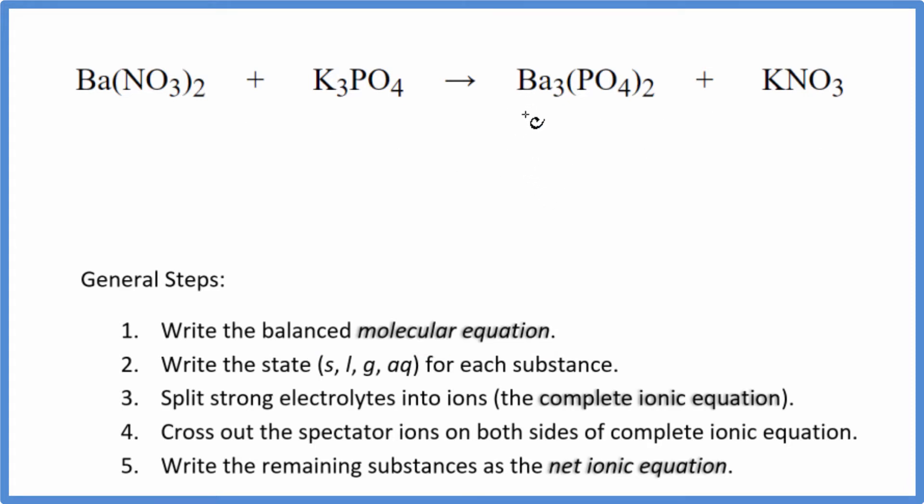I can see that I have three bariums here and just one here, so I'm going to put a three in front of the barium nitrate. Now I have two times the one, so I have two nitrates times three. That gives me six nitrates, so I really need to put a six here. So now I have the six nitrates. That gives me six potassium atoms. Let's put a two here, two times three. So the potassium atoms are balanced, two of the phosphates, two phosphates here. So that's the balanced molecular equation.